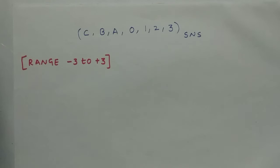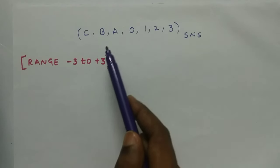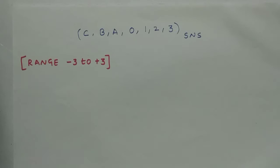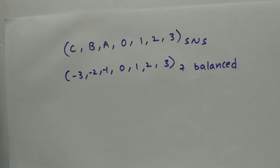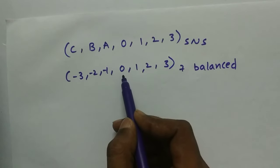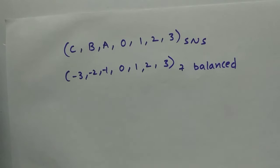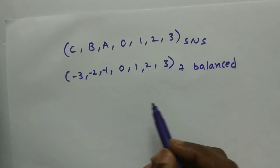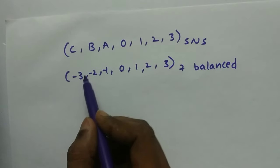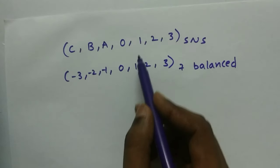Now let's take a different example where the number system range is different. In this example, the SNS values are C, B, A, 0, 1, 2, and 3, with a range of minus 3 to plus 3. To represent this SNS in a known number system, we use a balanced number system — specifically balanced base 7. The balance means that after 0, the number of positive values equals the number of negative values. So C represents −3, B represents −2, A represents −1, 0 represents 0, 1 represents 1, 2 represents 2, and 3 represents 3.